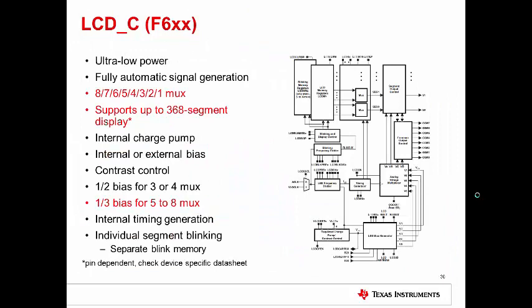The LCD-C module is found on some other F6XX family devices. This module goes up to 8 MUX, allowing it to support a much larger display, up to 368 segments. It also adds in 1 third bias mode for 5 to 8 MUX.